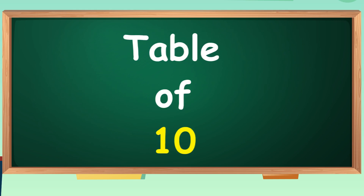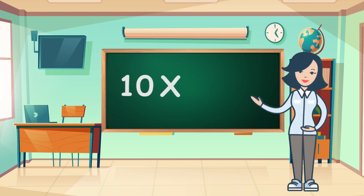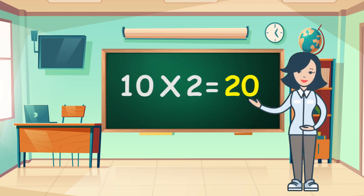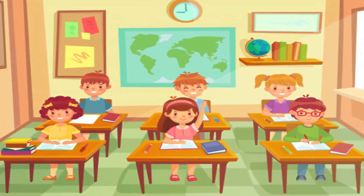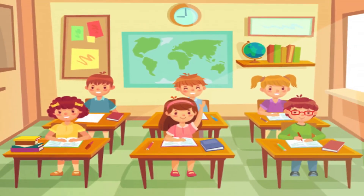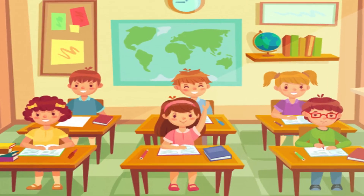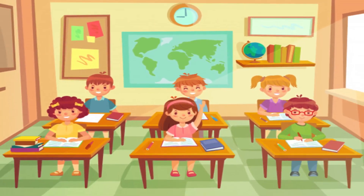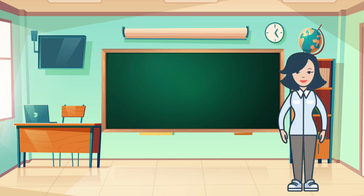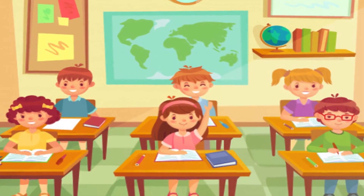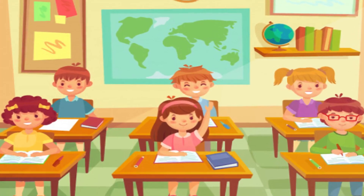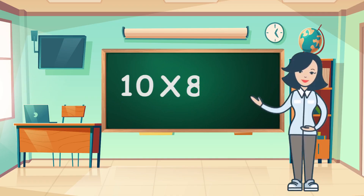Table of Ten. Ten ones are ten. Ten ones are ten. Ten twos are twenty. Ten twos are twenty. Ten threes are thirty. Ten threes are thirty. Ten fours are forty. Ten fives are fifty. Ten fives are fifty. Ten sixes are sixty. Ten sixes are sixty. Ten sevens are seventy. Ten sevens are seventy. Ten eights are eighty.